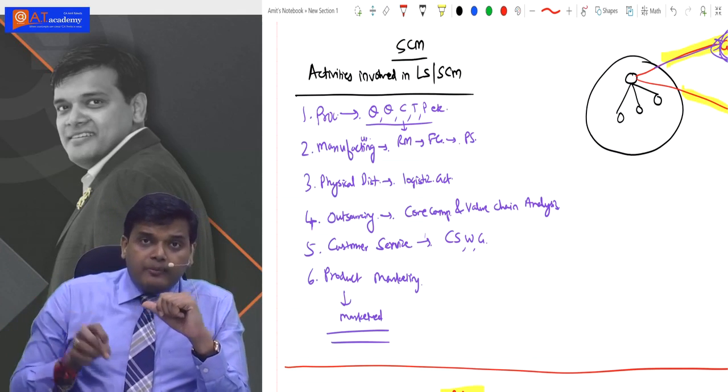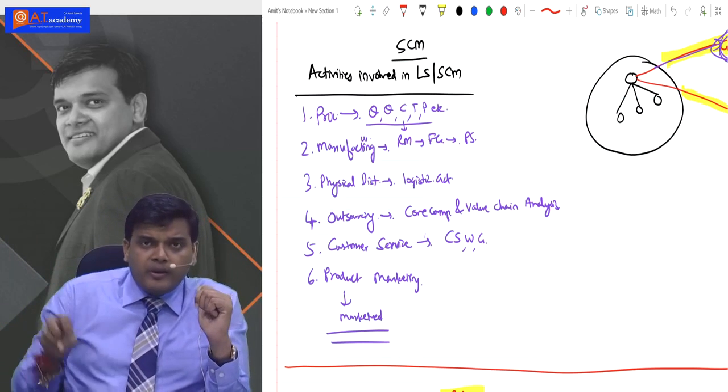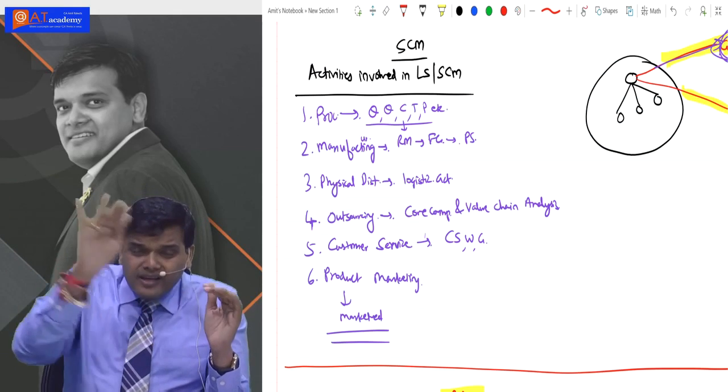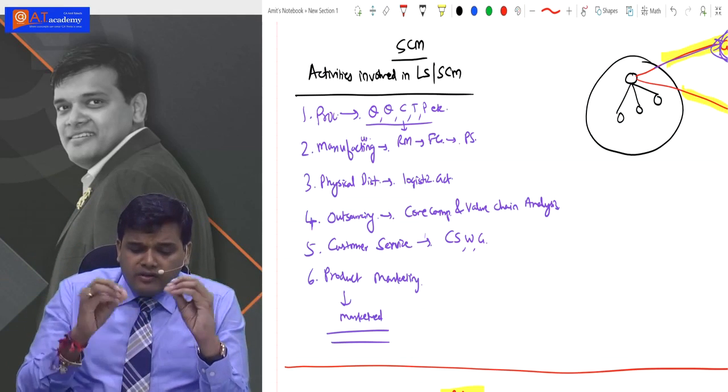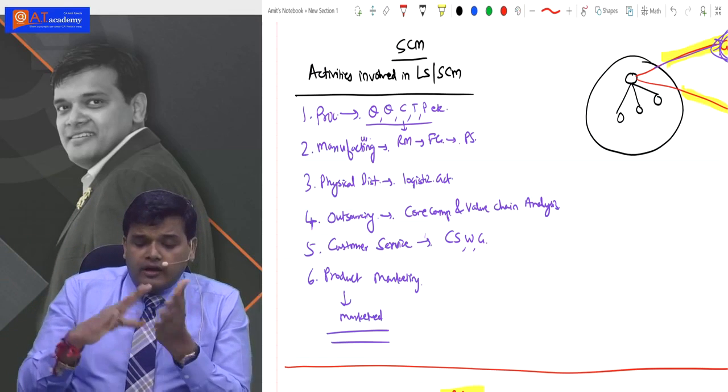In supply chain management, first you procure, after procurement you manufacture, then you distribute - a simple concept: procurement, manufacturing, distribution. After this, we can consider outsourcing as the fourth point.